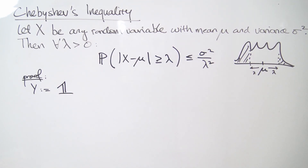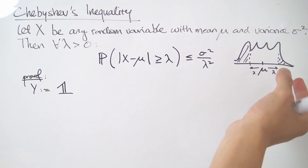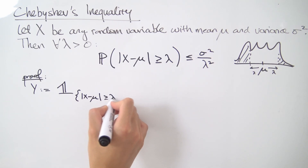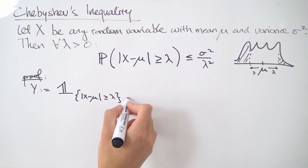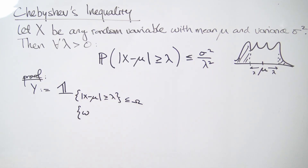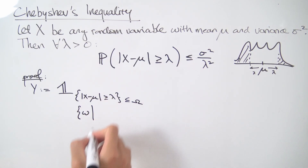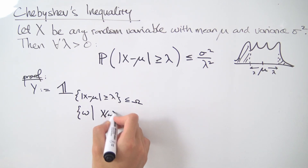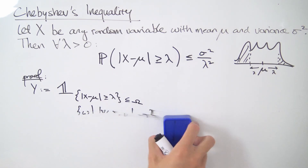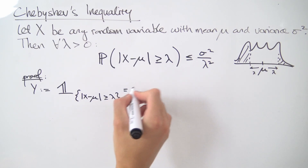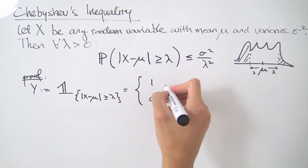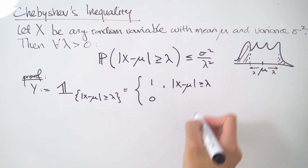Y is going to be some kind of indicator function. We're going to be indicating when we are at least lambda away from the mean, so we write this as the set where the absolute value of X minus mu is greater than or equal to lambda. This set is really a subset of your sample space — it's shorthand for the set of all outcomes omega such that the absolute value of X(omega) minus mu is at least lambda. The indicator Y is 1 when this condition holds and 0 otherwise.